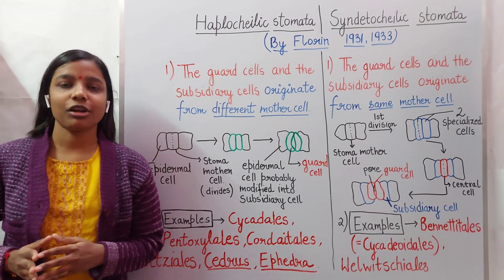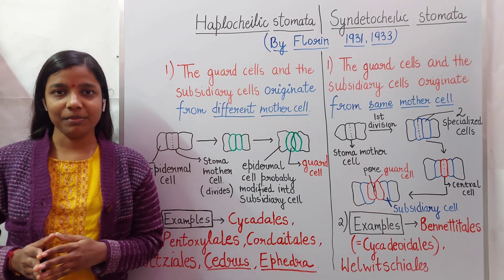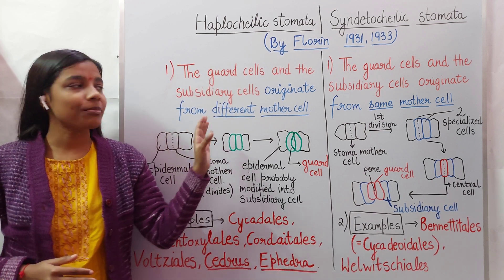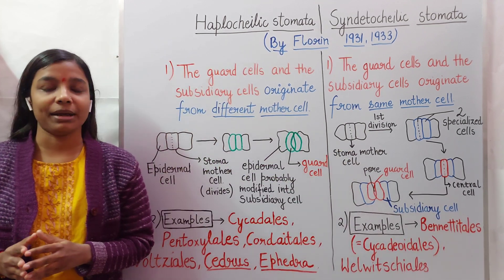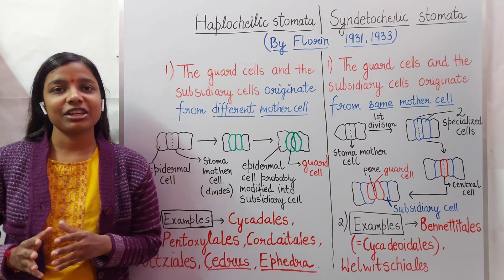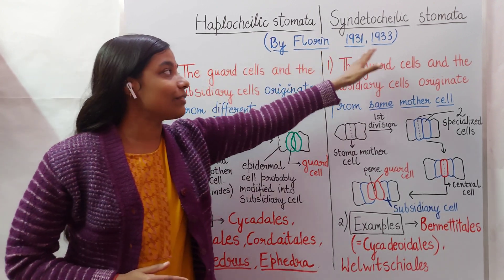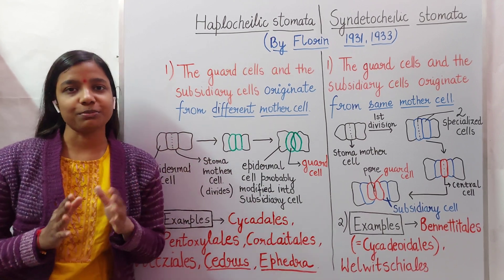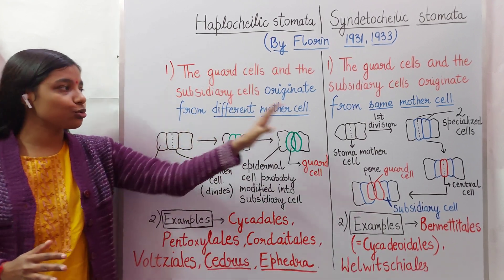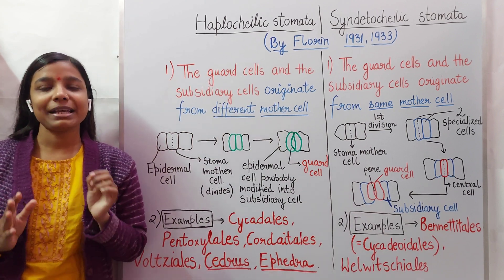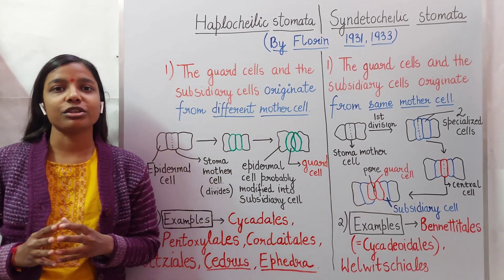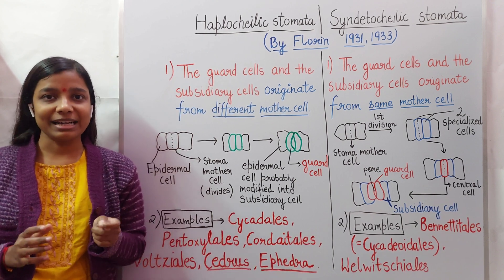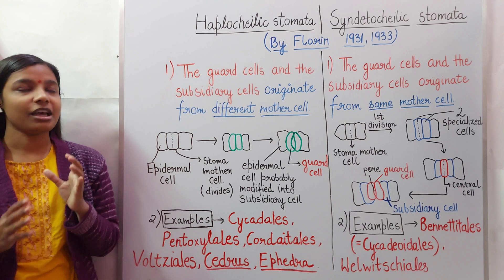Hello everyone, welcome to my channel all about biology. I'm Jyoti Verma and today we will discuss the difference between haplochelic stomata and syndetochelic stomata. This classification was first proposed by Florin in 1931-33, and he classified stomata of gymnosperms into these two types. The major basis of classification was the ontogeny of stomata, or the mode of origin of guard cells or subsidiary cells.